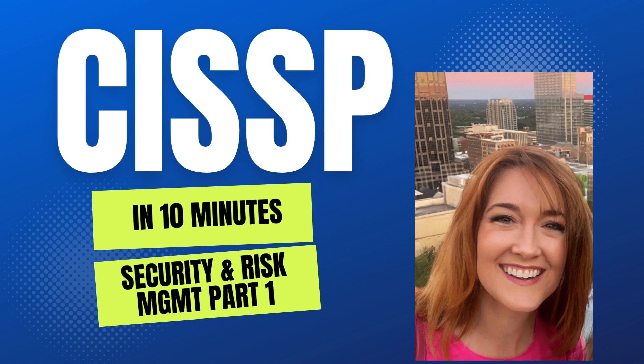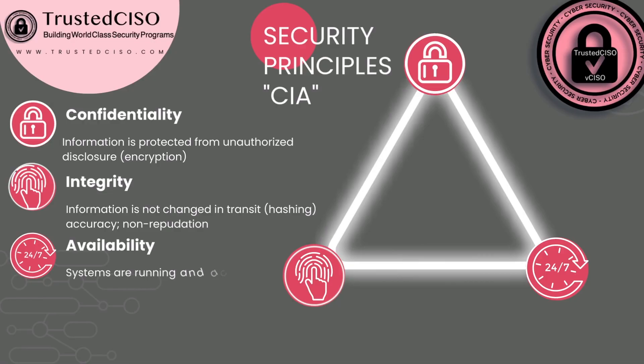We're doing the CISSP in 10-minute snippets. We start out with CIA — and we're not talking about the government spy agency. This is the basis, the foundation for cybersecurity, and it's referring to Confidentiality, Integrity, and Availability.